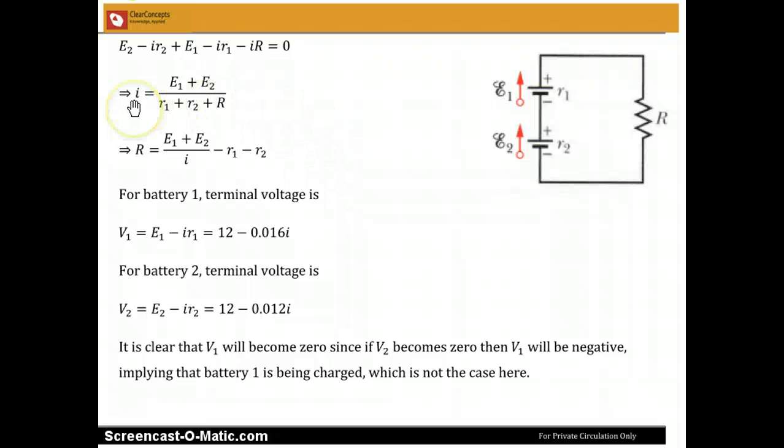So moving things around, we get I equals E1 plus E2 divided by R1 plus R2 plus R, which then gives us that R equals E1 plus E2 by I minus R1 minus R2, and we will keep that for later.